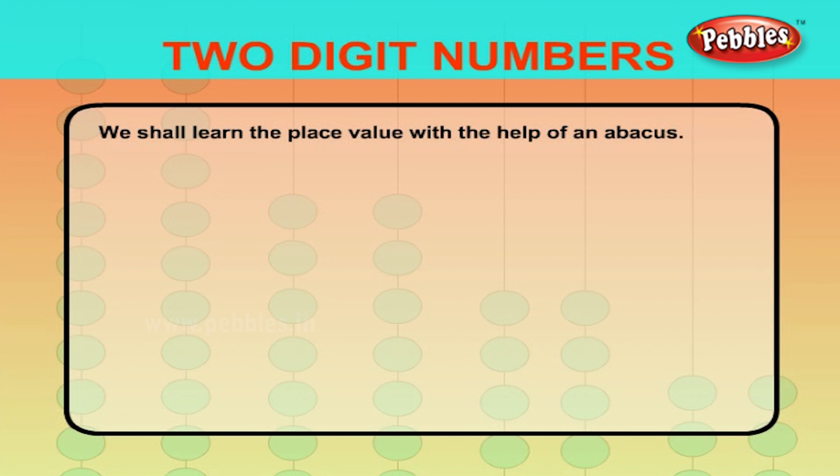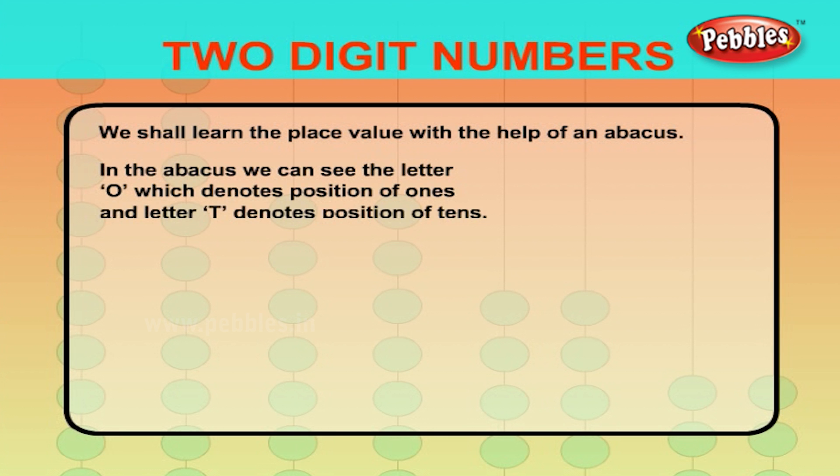We shall learn the place value with the help of an abacus. In the abacus, we can see the letter O which denotes position of 1s and letter T which denotes position of 10s.